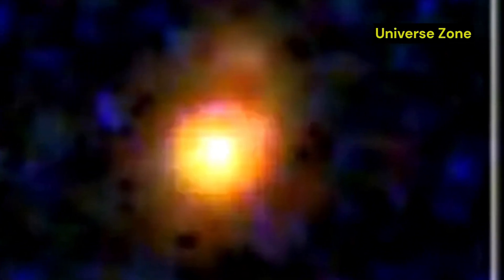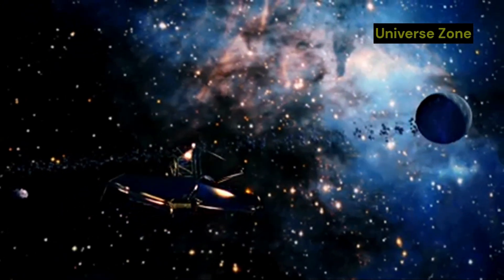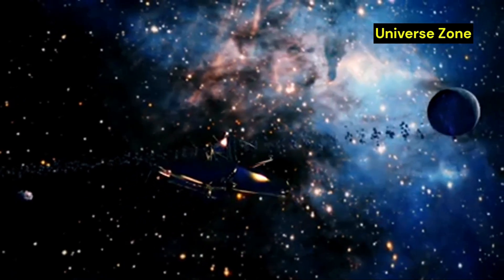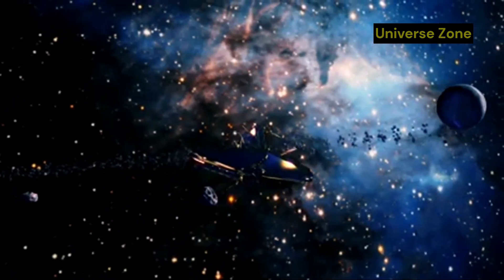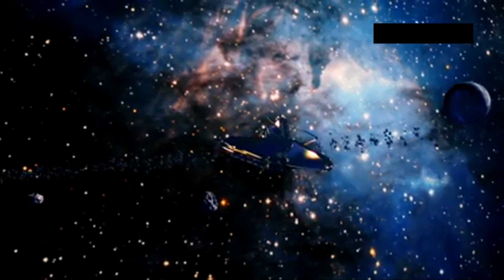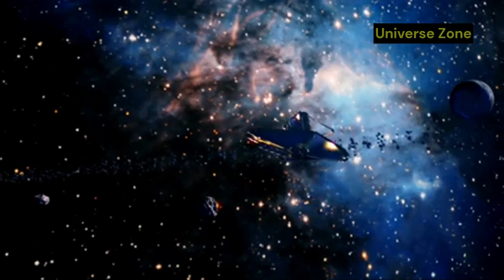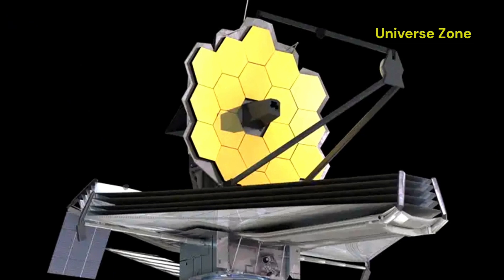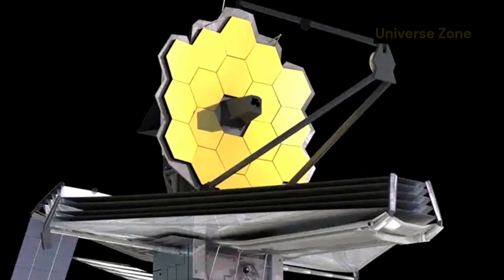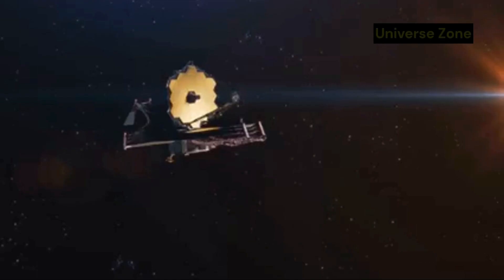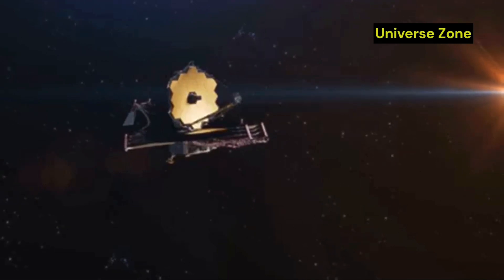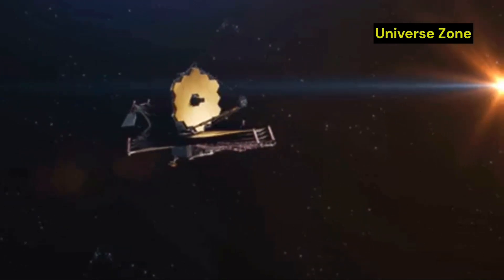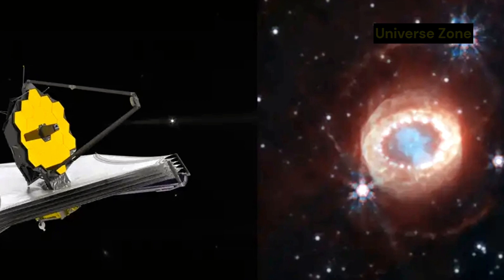The James Webb Space Telescope is a technological marvel, representing the pinnacle of human ingenuity and scientific achievement. It is the largest and most complex space telescope ever built, a testament to decades of research, development, and collaboration among scientists and engineers from around the world. The telescope's primary mirror is 6.5 meters in diameter, which is about three times larger than Hubble's primary mirror. This massive mirror is composed of 18 hexagonal segments, each coated in a thin layer of gold.